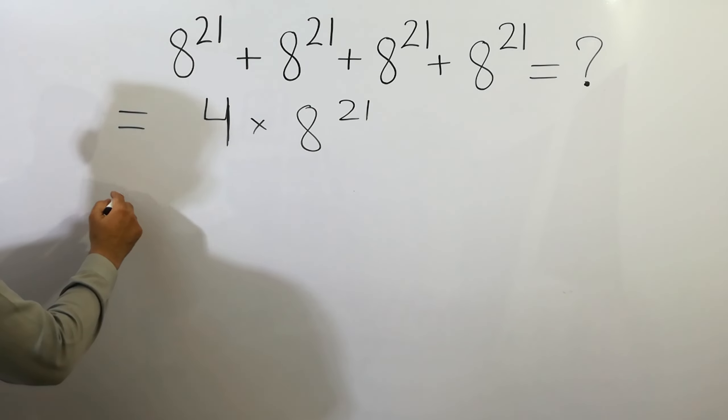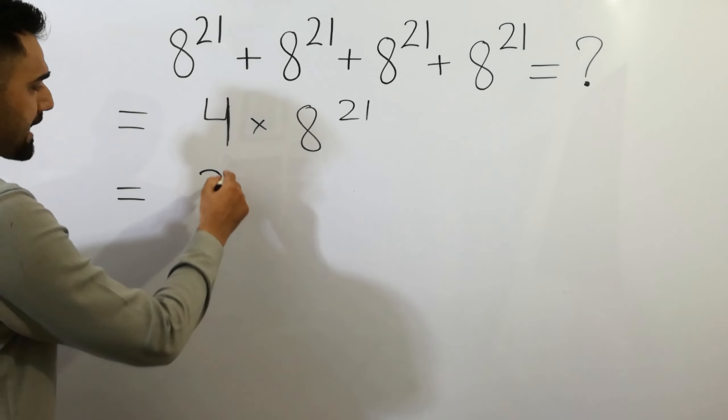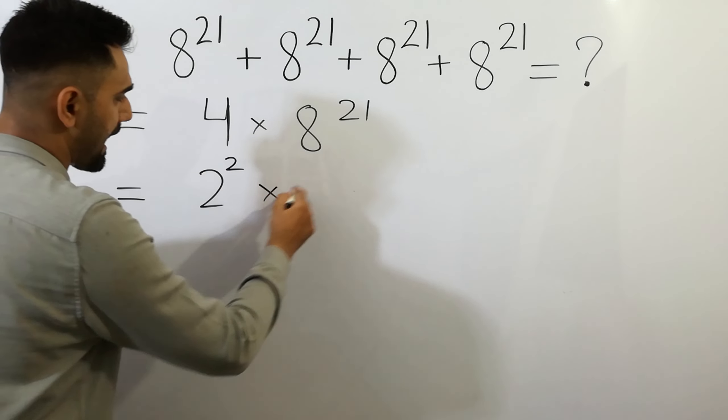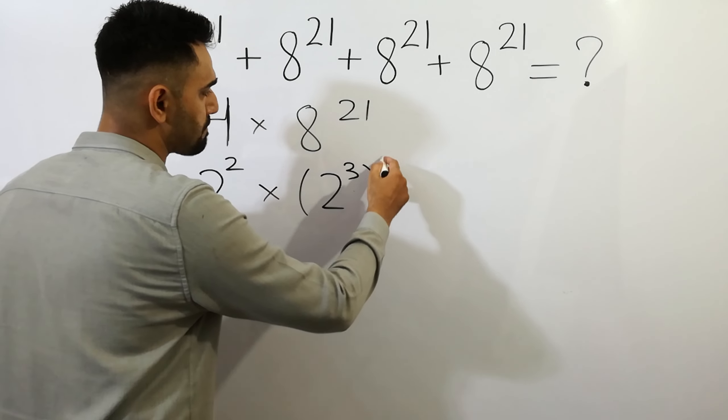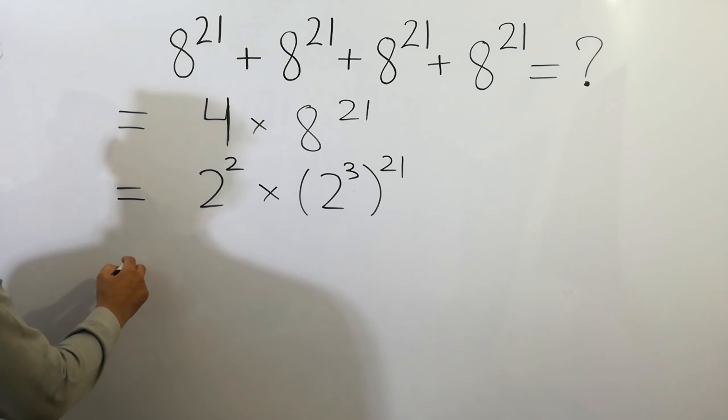And next, 4 can be written as 2 squared and 8 as 2 cubed to the power 21 as it is.